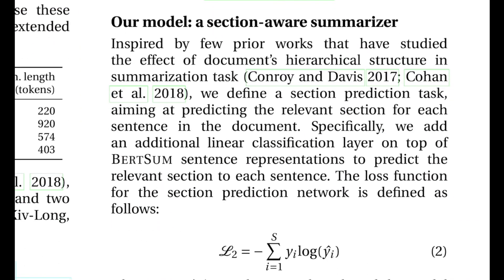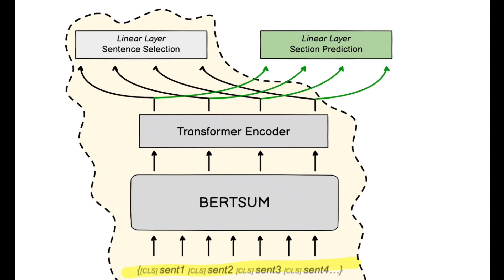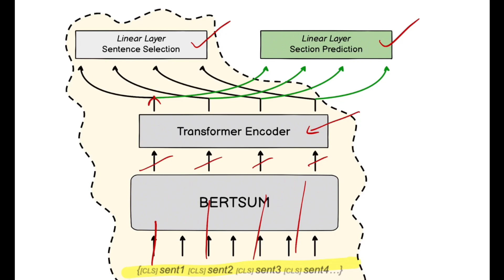The proposed method in this paper is called a section-aware summarizer that considers the document's hierarchical structure — specifically the sections in a paper. A linear classification layer is added on top of the BERTSum sentence representations to predict the relevant section of each sentence. Looking at the diagram: the original input has CLS inserted before every sentence, this goes into BERTSum, and four arrows come out corresponding to each CLS token. Then a linear classification layer produces two losses: a sentence selection loss and a section prediction loss — hence the term 'multitask loss.'